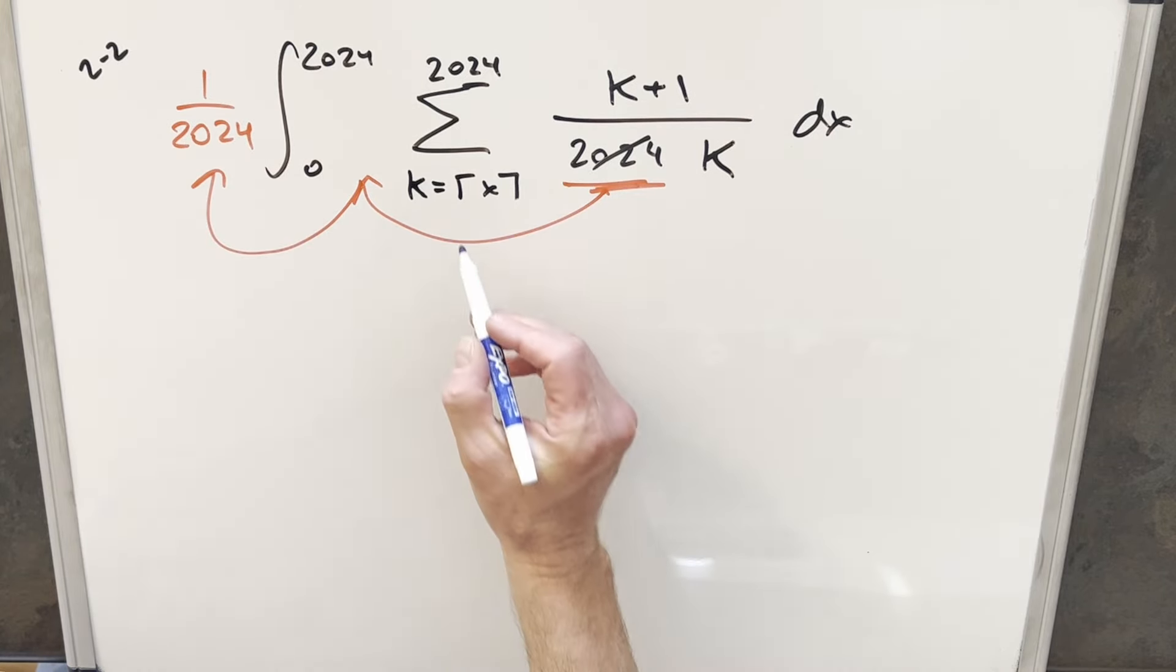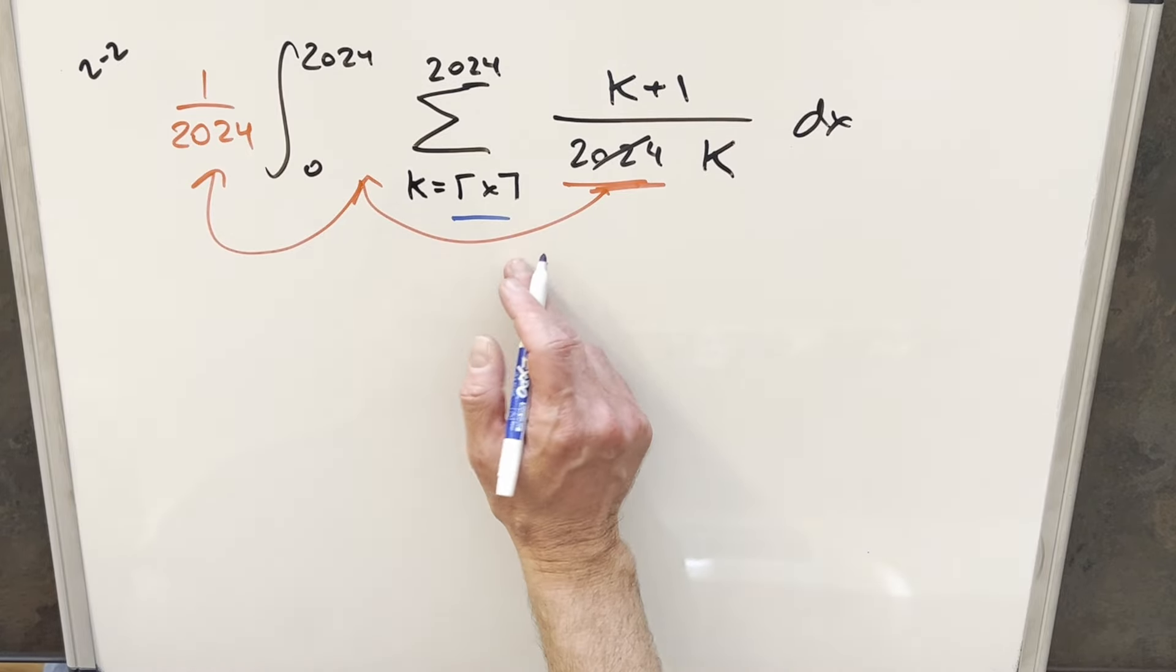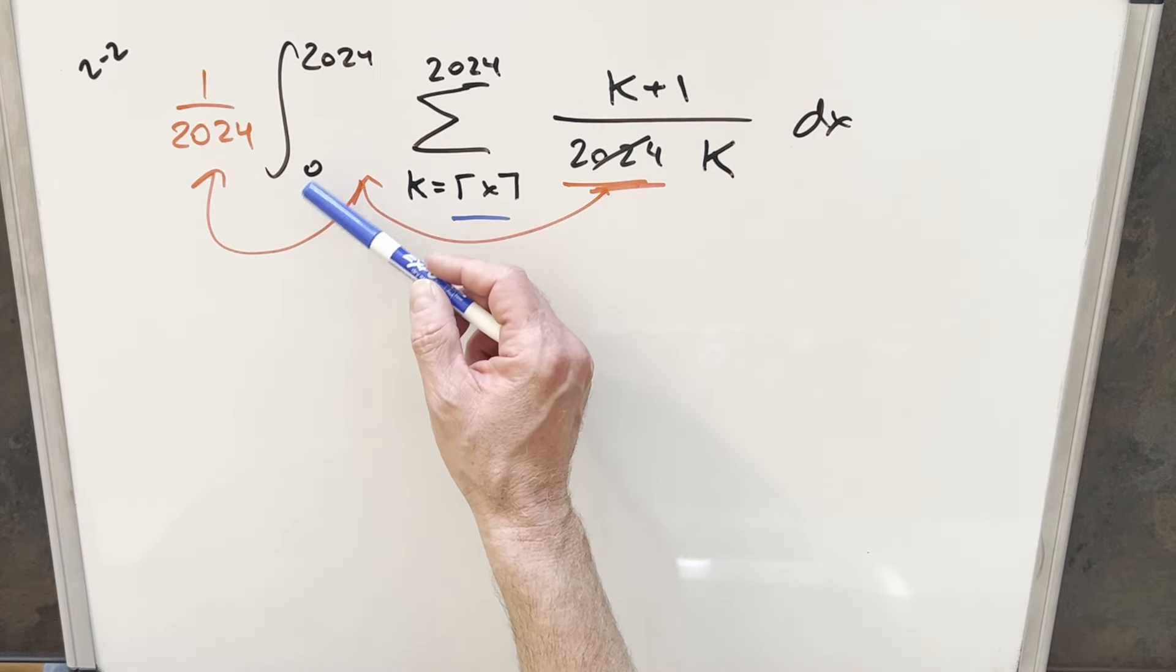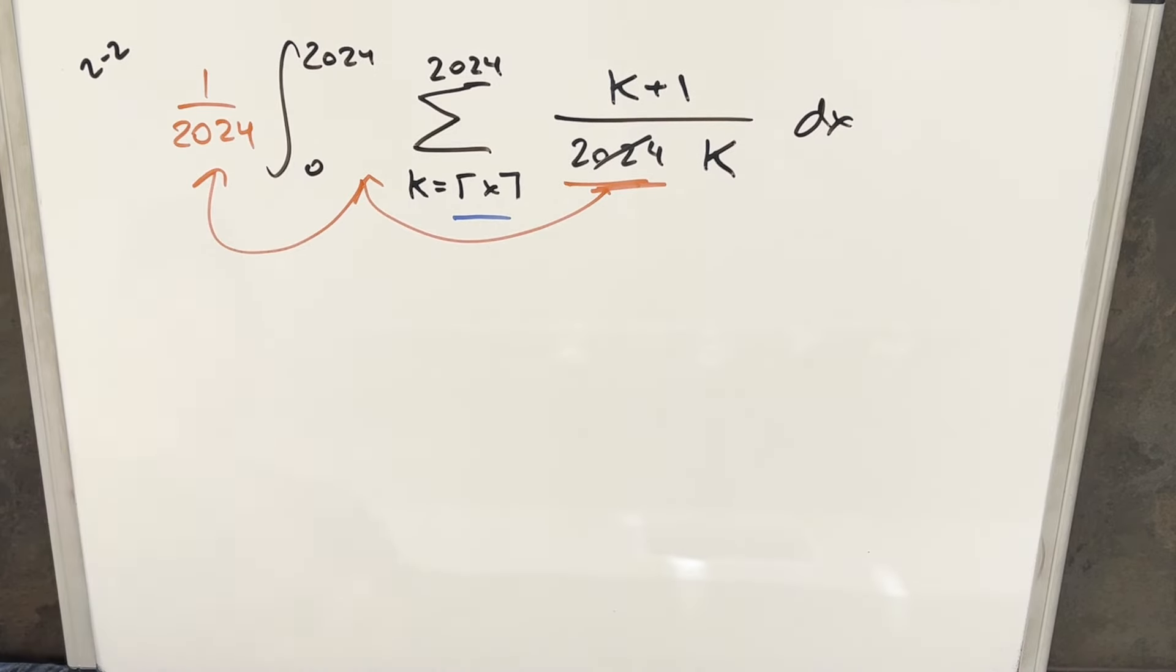And then from here, what I want to do is just deal with this ceiling function, because it's really hard to do anything until we take care of this. And the way we can handle this, similar to how we handle the floor, is by breaking up our bounds. If we break the bounds up on integers, then this is going to simplify to an integer value. So let's just see how this is going to work.